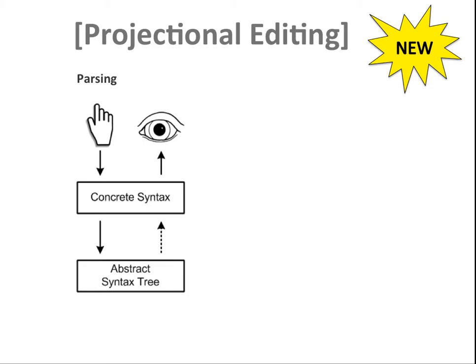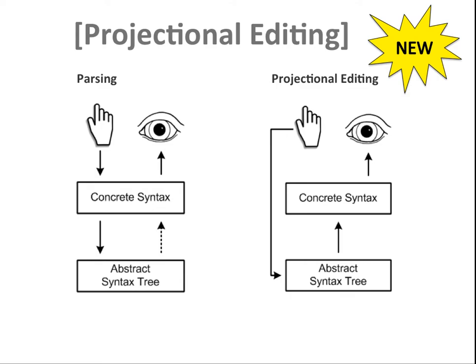Let me explain what projectional editing means. In a normal parser-based system, you as the user interact with the concrete syntax — if you change something about the program, you change the text. A parser then takes the text, understands its structure, and builds a syntax tree, which you use as the basis for analyses, transformations, and interpretations. In projectional editing, whenever you change something in a program, you change it directly in the abstract syntax tree. You still see a concrete syntax, but that concrete syntax is projected from the abstract syntax. In the parsing case there's an arrow from concrete syntax to abstract syntax, so your text must be parsable and you can only use linear sequence characters.